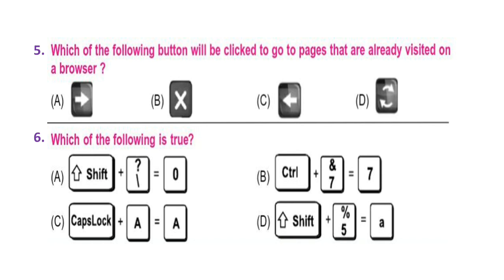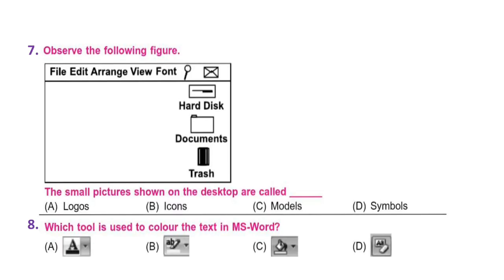Question 7: Observe the following figure. Here in the figure, File, Edit, Arrange, View, Font and some icons are given. The small pictures shown on the desktop are called: A. Logos, B. Icons, C. Models, or D. Symbols.